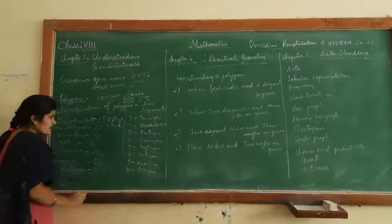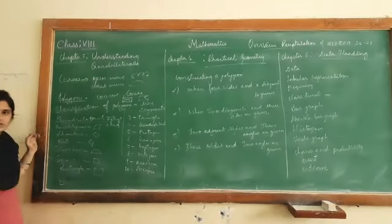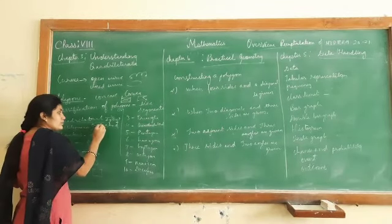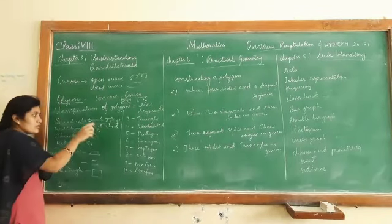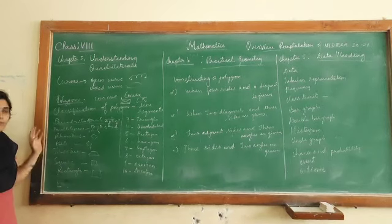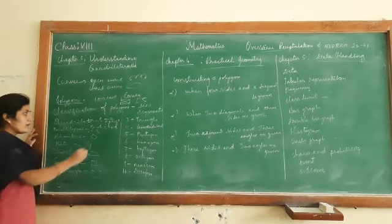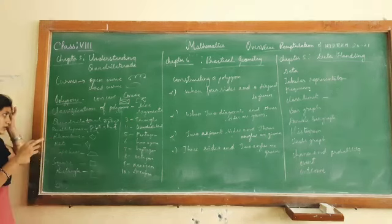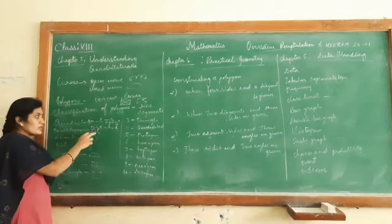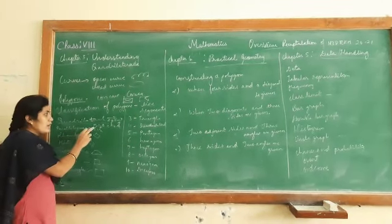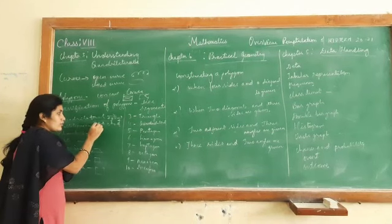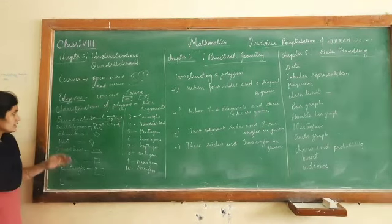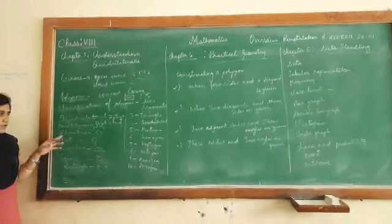Let us discuss the properties of a parallelogram: it is a quadrilateral where four sides are present, opposite sides are parallel and equal, and opposite angles are equal. These are the properties of a parallelogram.